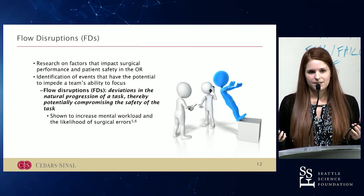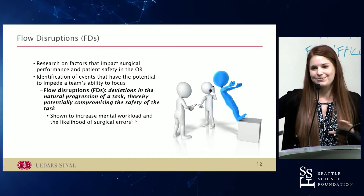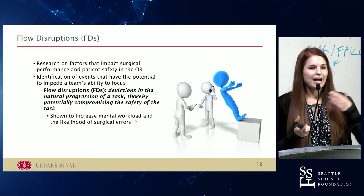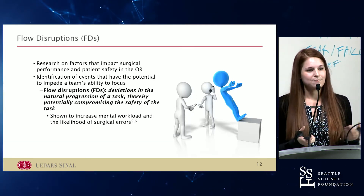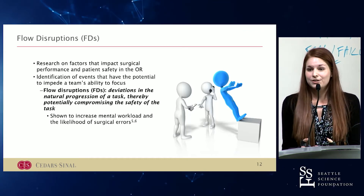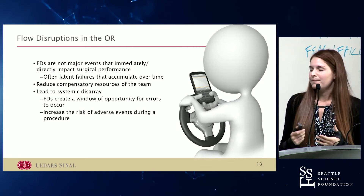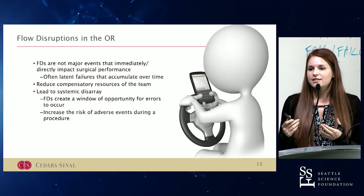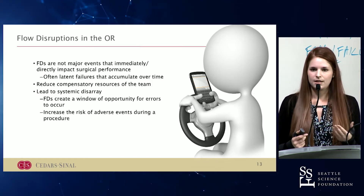Flow disruptions can extend into all layers of the system. They can involve communication issues. The layout of the room — I can't tell you how many operating rooms I've seen with tons of wires and tubing draped across the floor that we just expect humans to walk over. Should you have to worry about carrying a tray of instruments and stepping over wires in an OR? A lot of us do it every day, but it doesn't mean that's how our environments should work. Flow disruptions can also involve the technology and tools we're using. It's important to note that flow disruptions aren't major events that immediately impact surgical performance — they serve to reduce the compensatory resources of you and the surgical team.